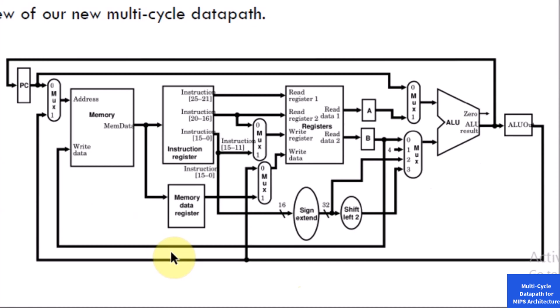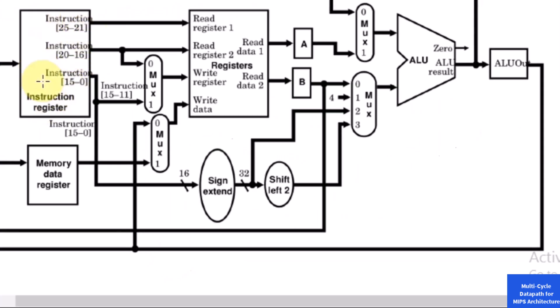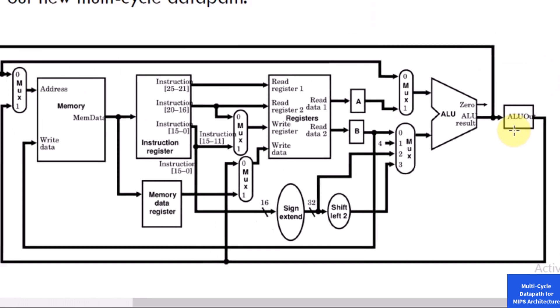Generally, we can say we need to perform the following steps for all instructions: first, instruction fetch; second, instruction decode and register fetch; third, execution, memory address computation, branch completion, or jump completion; fourth, memory access or R-type instruction completion; and fifth, memory read completion.